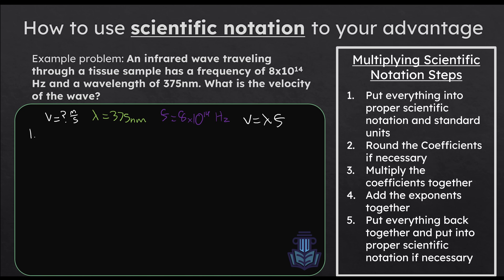So I plug everything into the equation: v = λf = 375 nanometers × 8 × 10^14 hertz. In step one, we're putting everything into proper scientific notation and standard units. The frequency is already there, so we don't have to touch it. But we do have to work with the wavelength — first, let's put it into standard units and get rid of 'nano' by replacing it with 10^−9. So 375 nanometers = 375 × 10^−9 meters.